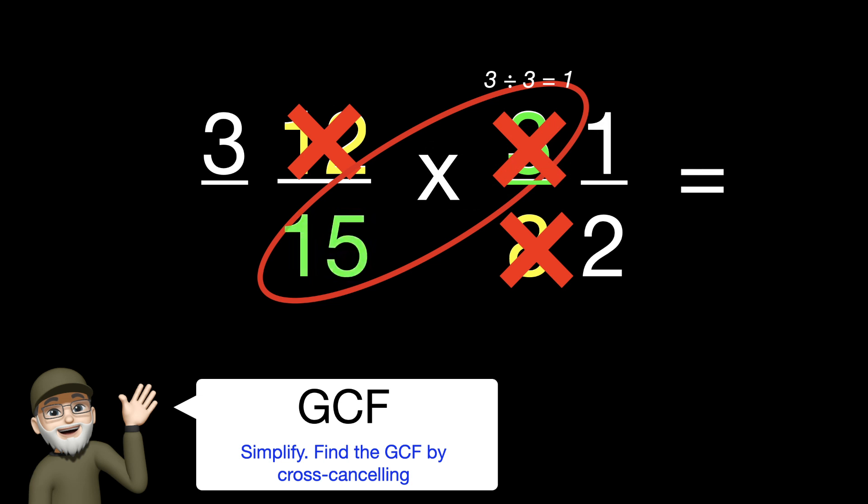On the bottom, the 15 would be 15 divided by 3 is 5. We cancel out the 15 and rewrite that as 5.